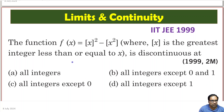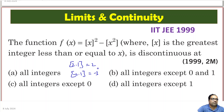We know the greatest integer function: greatest integer function of 2.1 is actually 2, and of minus 2.1 is minus 3, which is the greatest integer less than or equal to the given x.